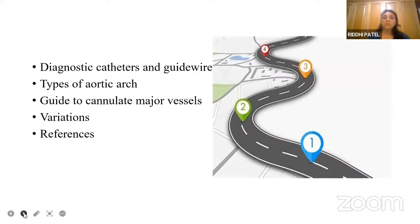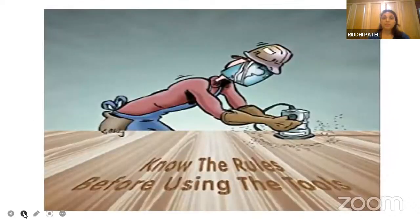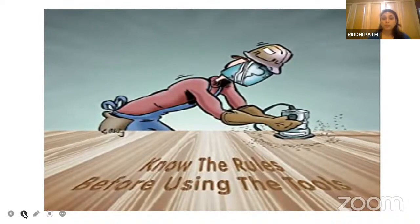First of all, we will learn the diagnostic catheters and the guide wires, types of the aortic arch, guide to cannulate the major vessels, and the variations and the references. Before starting the cannulation of the difficult arch or the tortuous anatomy, we will see first what are the tools for cannulating.